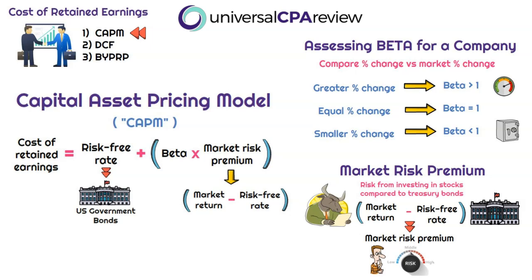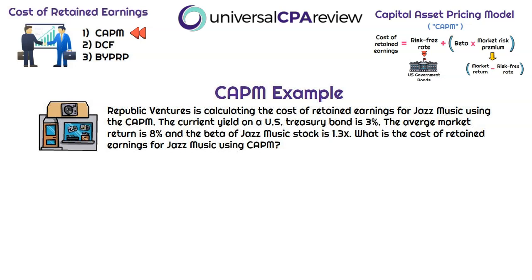Now that we've talked through each component of the CAPM, hopefully the formula makes more sense. Let's calculate the cost of retained earnings for Jazz Music using CAPM. It tells us the current yield on a U.S. Treasury bond is 3% — that's the risk-free rate. The average market return is 8%, and the beta of Jazz Music stock is 1.3x, meaning it's more volatile than the overall market.